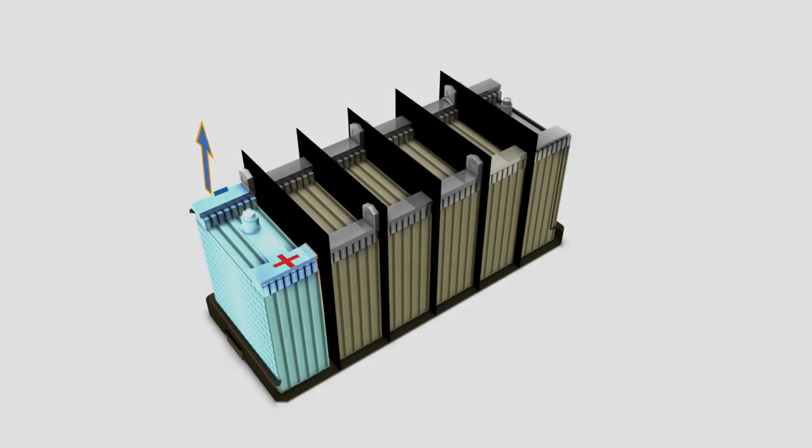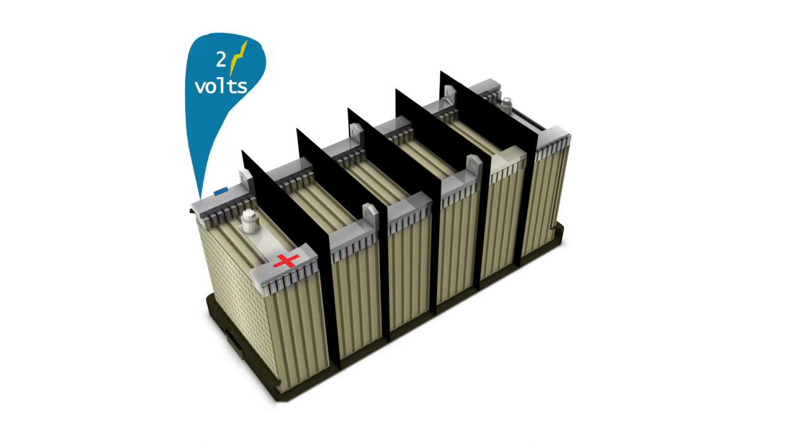The excess electrons flow out the negative side of the battery through the electrical device and back to the positive side of the battery. At the positive battery terminal, the electrons rush back in and are accepted by the positive plates. The oxygen in the active material lead dioxide reacts with the hydrogen ions to form water, and the lead reacts with the sulfuric acid to form lead sulfate. This process produces two volts of electricity.